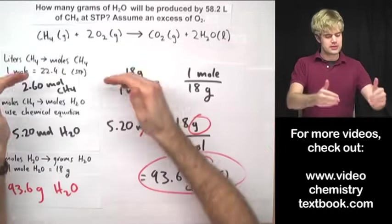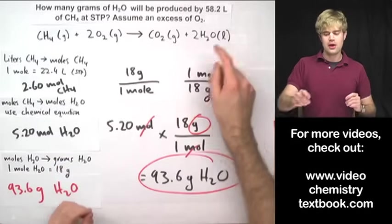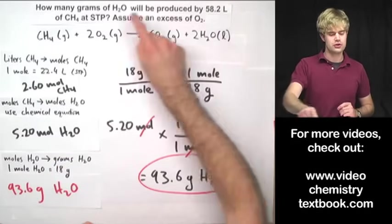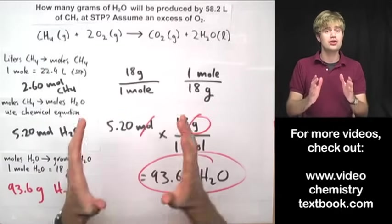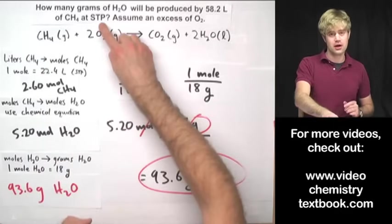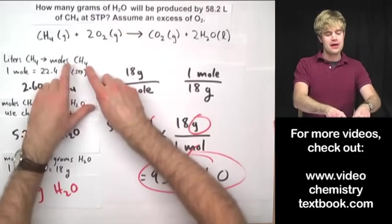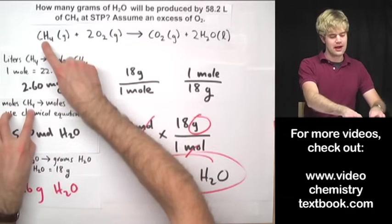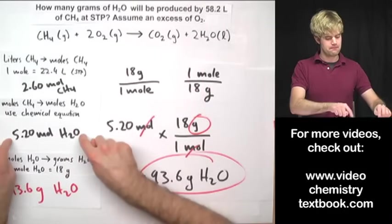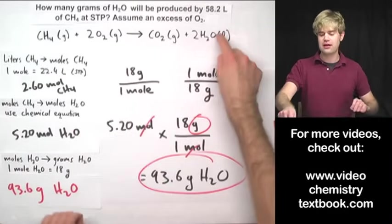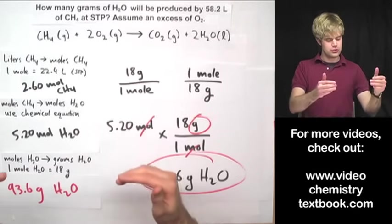Let's just quickly review the steps that we went through to do this. The first thing that we did is we converted our 58.2 liters into moles and we could take advantage of that 22.4 liter rule because it was at STP. That gave me the moles of CH4. Then I took the moles of CH4 and I found out how many moles of H2O I'd get.